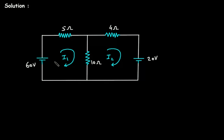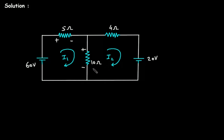First we will apply mesh analysis to loop number 1. According to the direction of this current, this terminal will be higher potential and this will be lower potential. Similarly, this will be higher potential and this will be lower potential — so this side is positive and this side is negative.